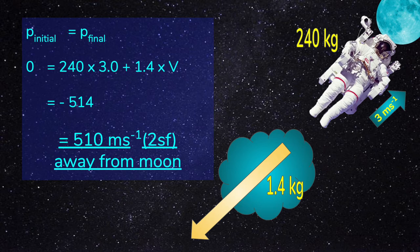Momentum is a vector, so that we know that the two momenta in opposite directions must be equal and opposite so that the total is still 0. We find that the velocity of the gas was minus 510 meters per second. The minus sign tells us it travels in the opposite direction to the astronaut and therefore away from the moon.